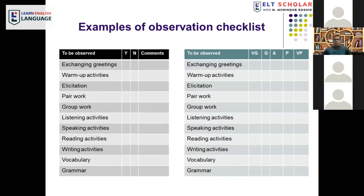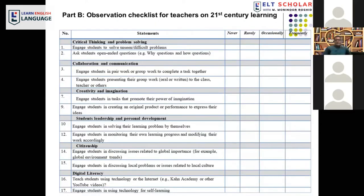In a recently funded government research project on 21st century skills, our team wanted to see how frequently teachers practice critical thinking, collaboration, communication, creativity and imagination, student leadership, personal development, and citizenship. Trained observers went to schools on behalf of the research team and put tick marks on a scale — never, rarely, occasionally, or frequently — for each skill. This generated quantitative data for analysis.